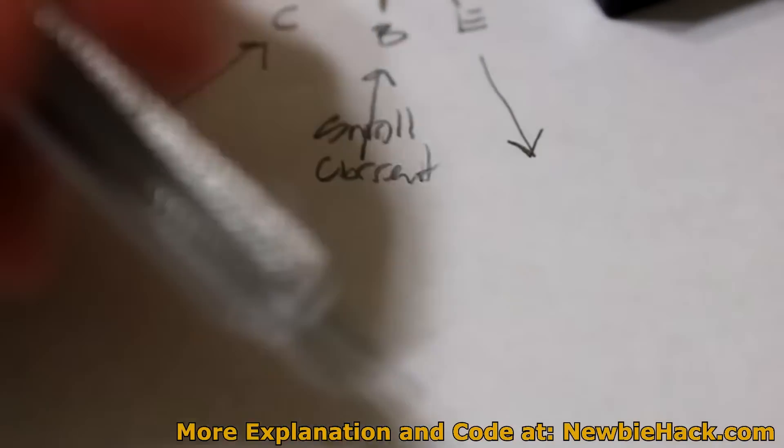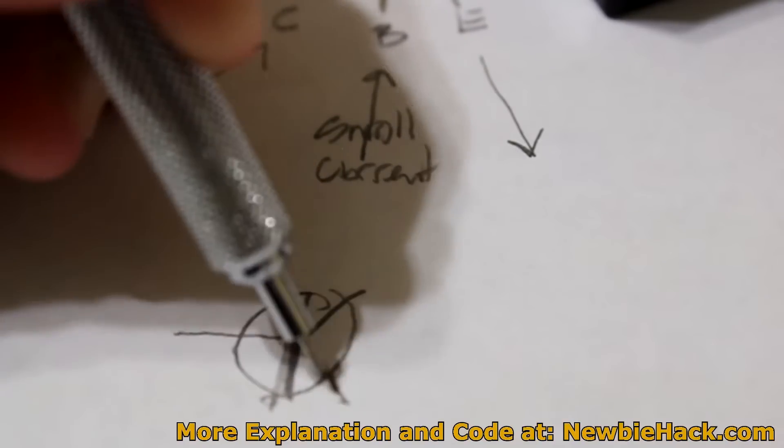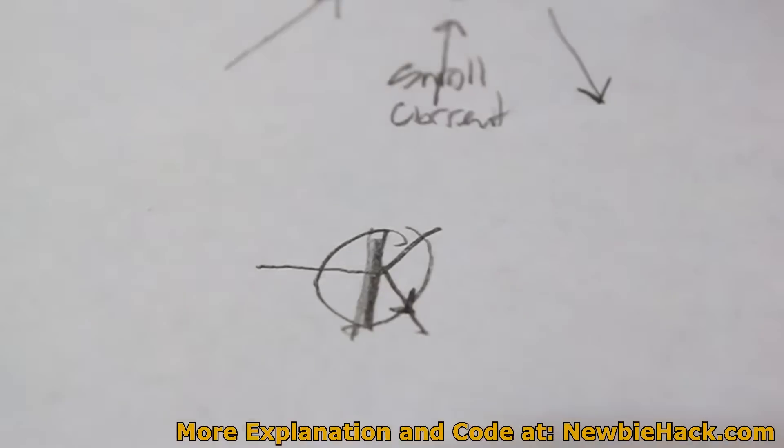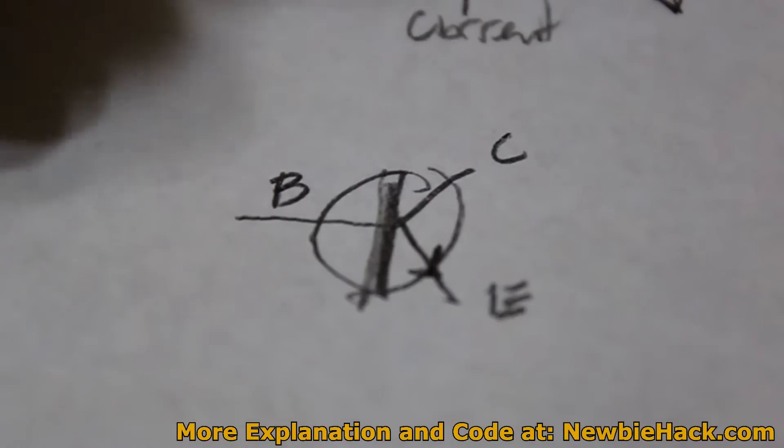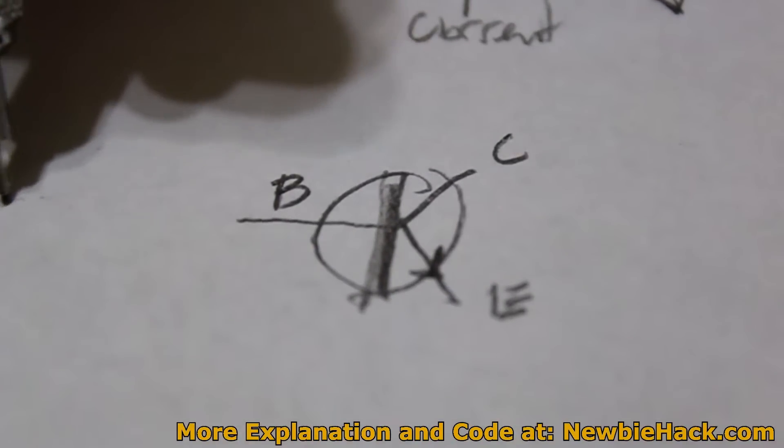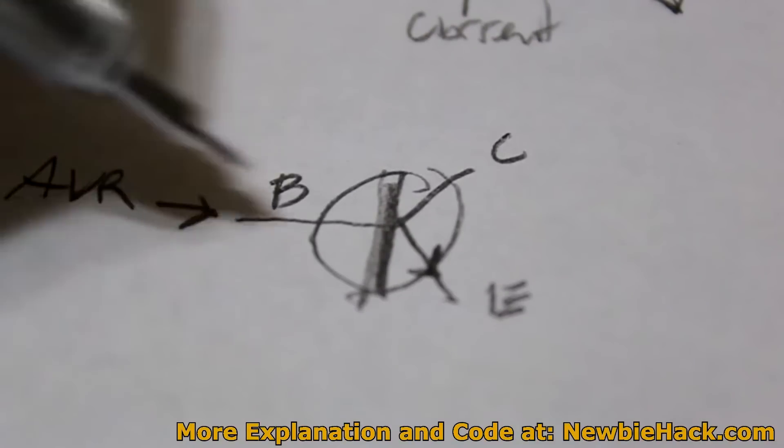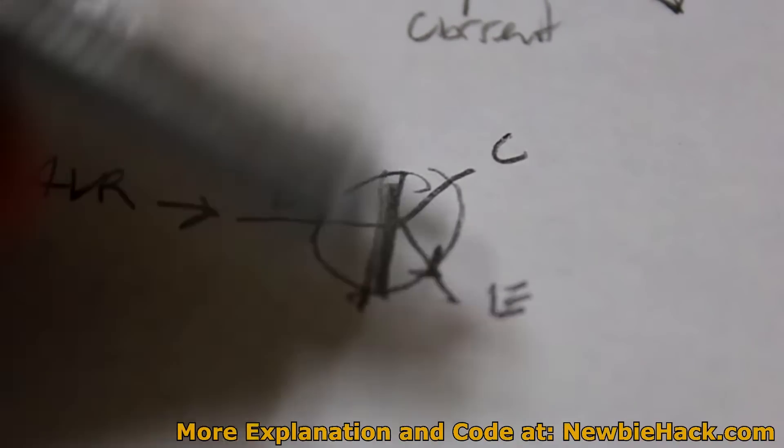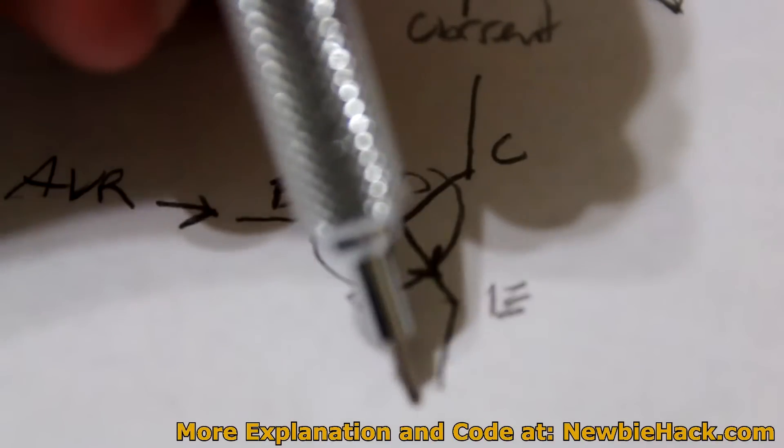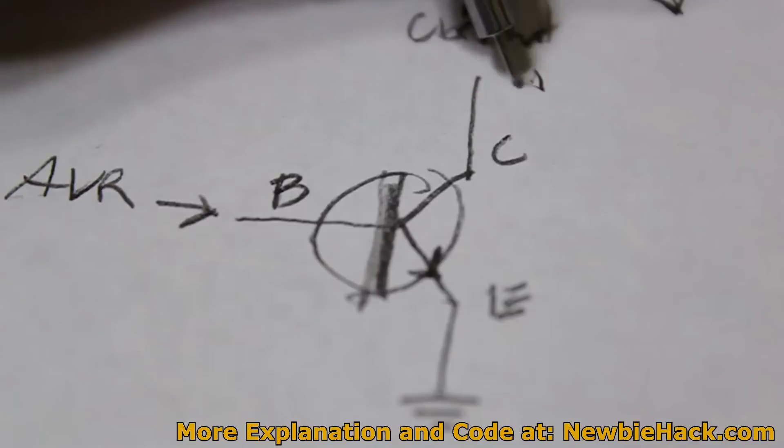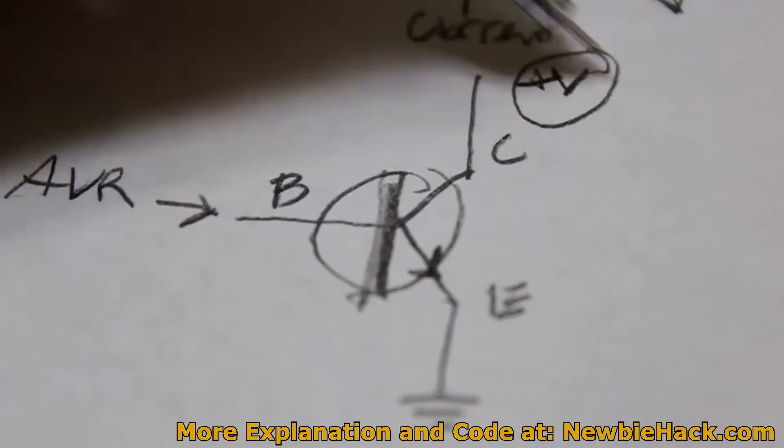The schematic symbol for a transistor looks like this. So to the base will come our AVR output pin. When the AVR outputs a signal, a 5 volt signal, this entire line will be connected to ground and this will be plus voltage, the higher current voltage. And this will also be 5 volts as well. It is just a higher current voltage that supplies the entire circuit.